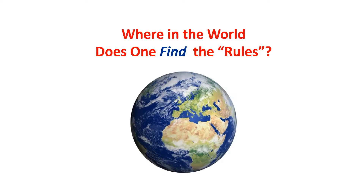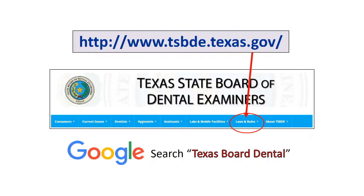Where do you find the rules? We are speaking of the rules and regulations, as well as the Dental Practice Act, all of which comprise the law that governs and regulates the licensure of Texas dentists, dental hygienists, and the registration of labs. You can find these rules at the website for the Texas State Board of Dental Examiners, or simply Google search for the words 'Texas Dental Board' or 'Texas Board Dental' — it will be the first link in the search.